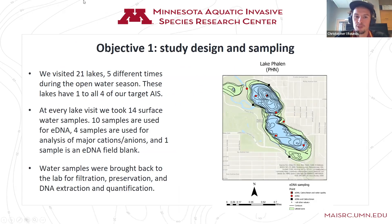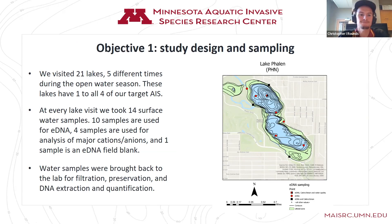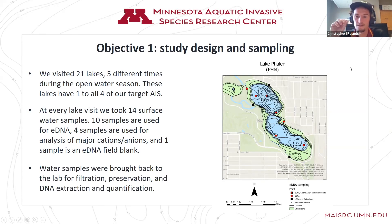Getting more into the study design of objective one: we have a bunch of different lakes, all with known populations of these four aquatic invasive species. We visit each of these lakes five different times throughout the open water season, roughly April to November. At each lake visit, we take 14 different water samples — 10 samples for environmental DNA, and four samples at the same points used for analysis of major cations and anions. We also carry one field blank sample for quality control to ensure no contamination.